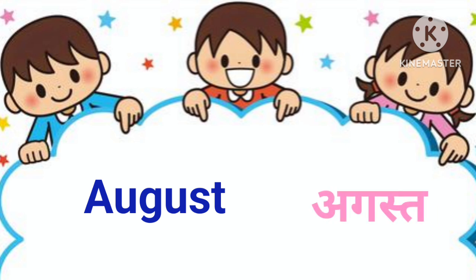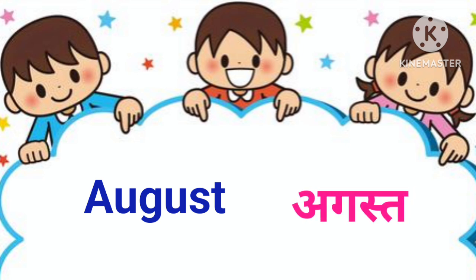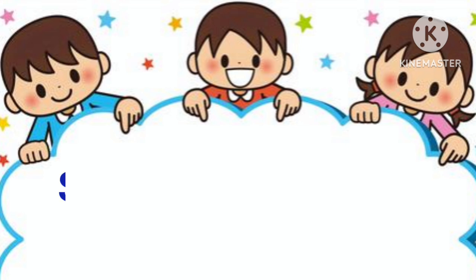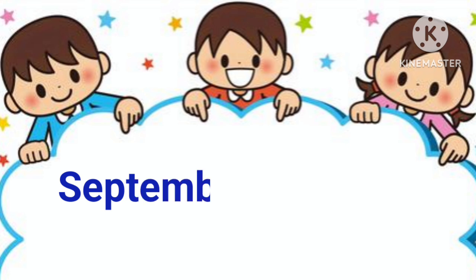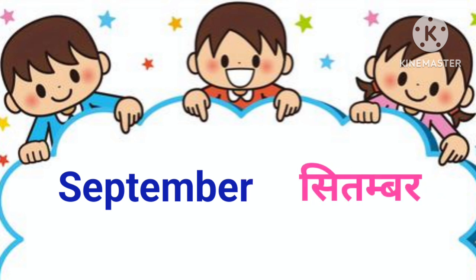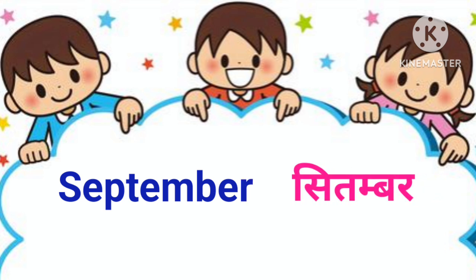August. August means August. S, E, P, T, E, M, B, E, R. September. September means September.